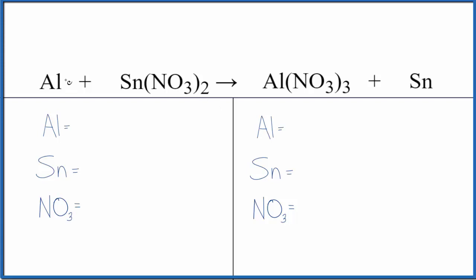We'll start with the type of reaction. The aluminum here is pushing the tin out, so the tin's all by itself. Aluminum then is with the nitrate, aluminum nitrate. So this is a single displacement reaction because the aluminum displaced the tin.